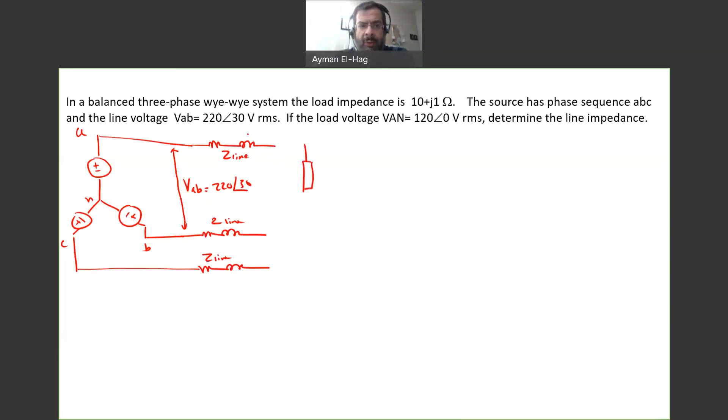The load is Y-connected because this is a Y-Y connection. So here we have a Y-connected load. I will call it A, B, and C. Connect the B to the B, the C to the C, and A to the A, and here is N. We know that the impedance Z-Y is equal to 10 plus J1. And the voltage here, VAN, is 120 angle of 0.